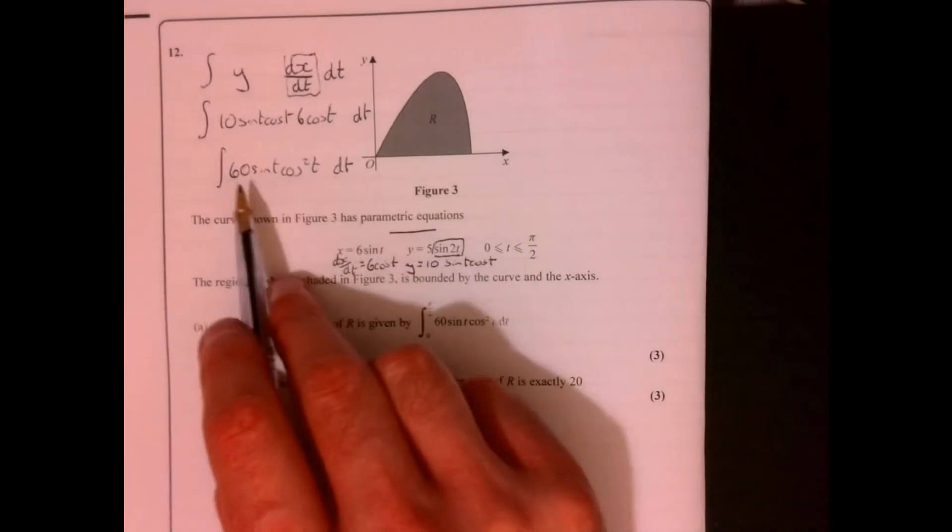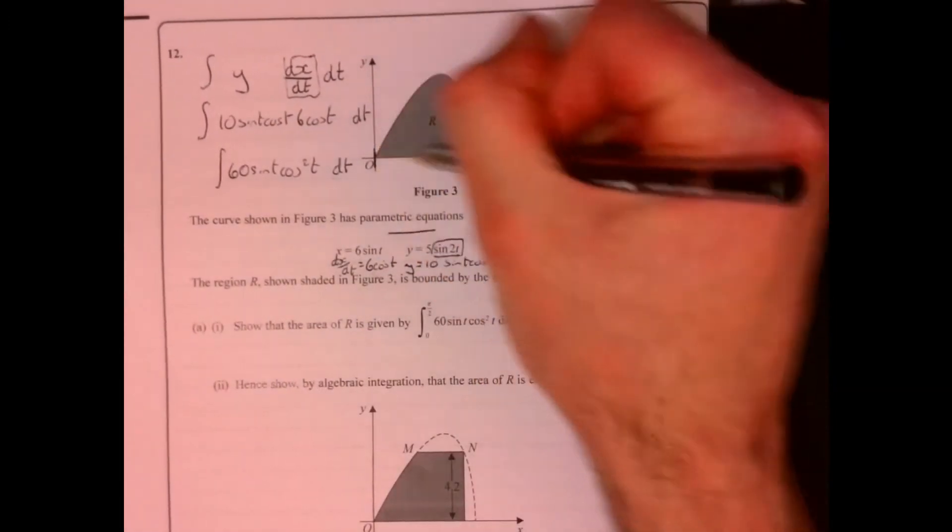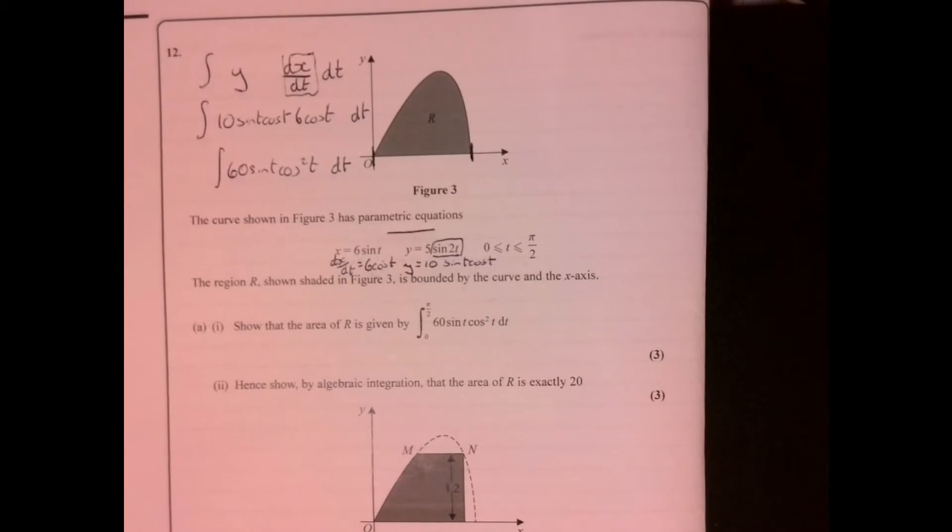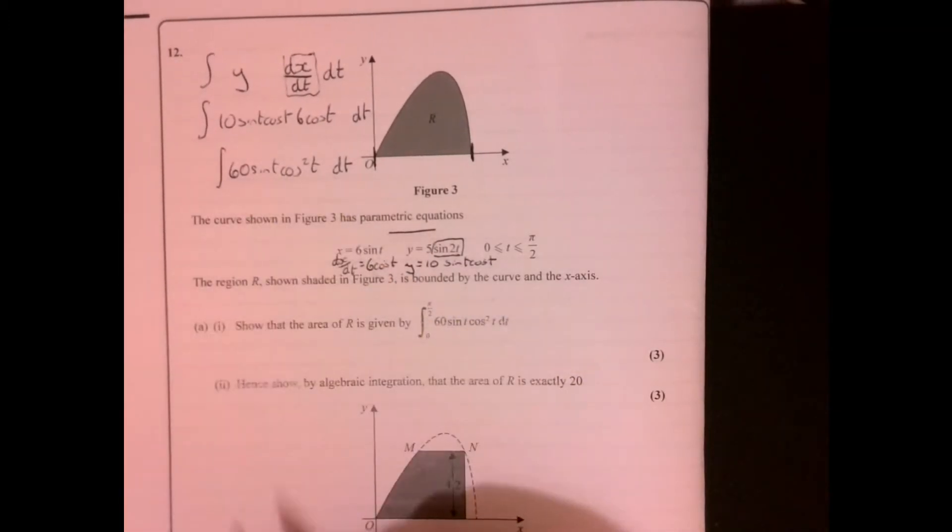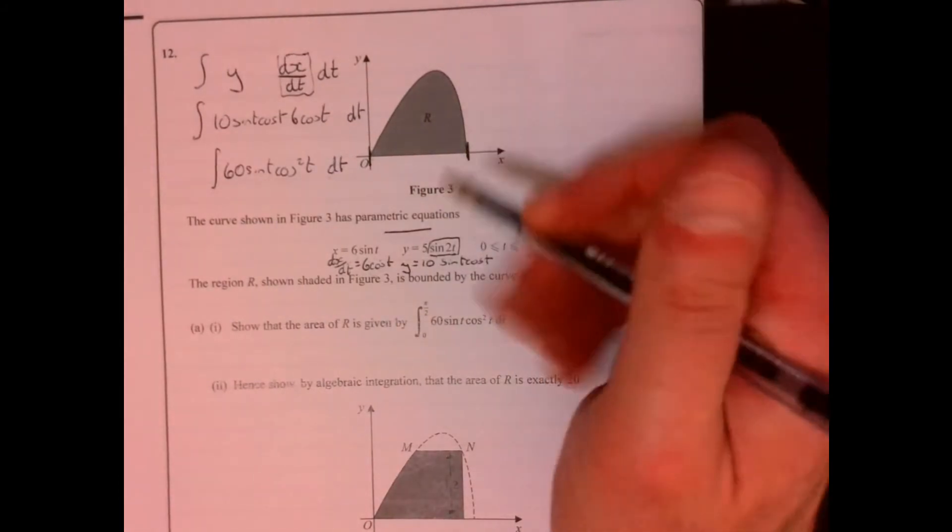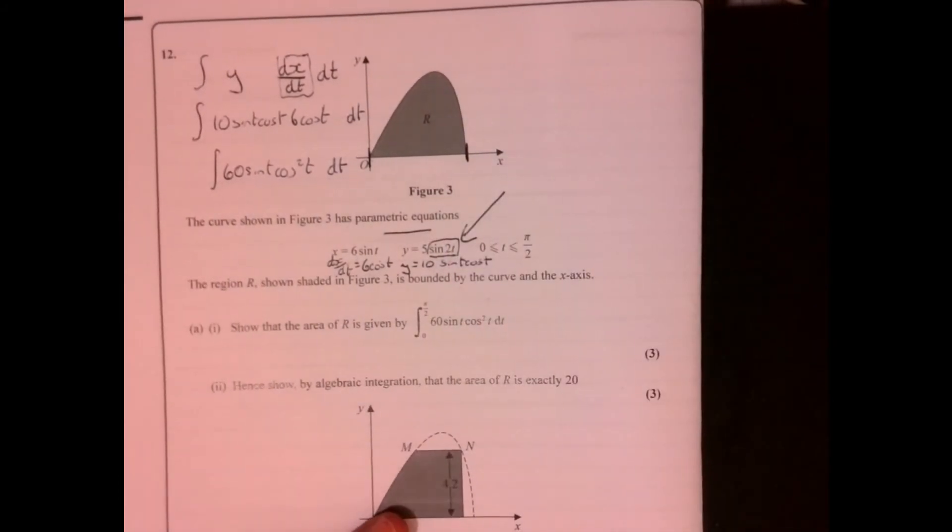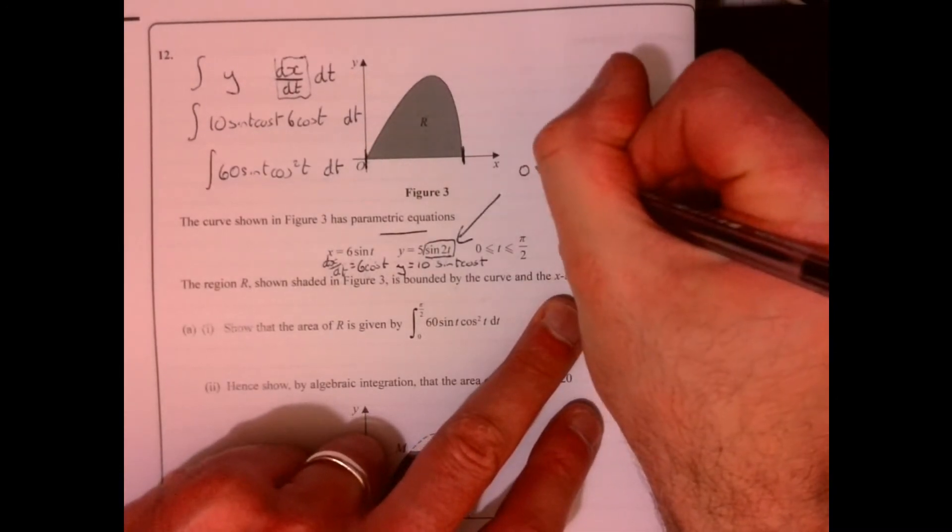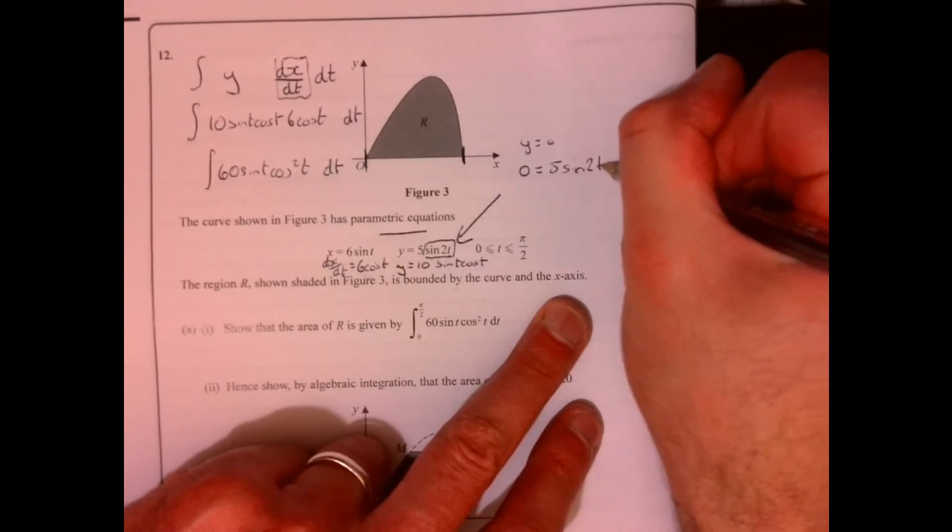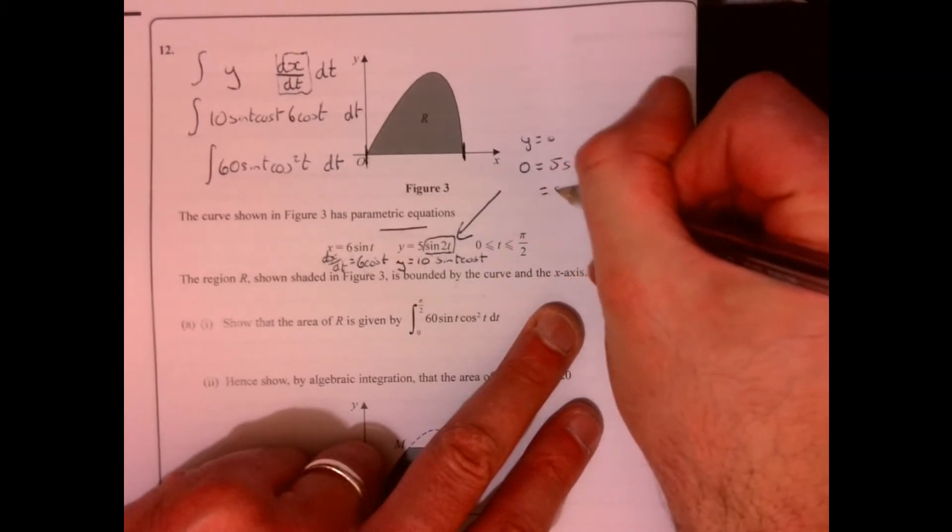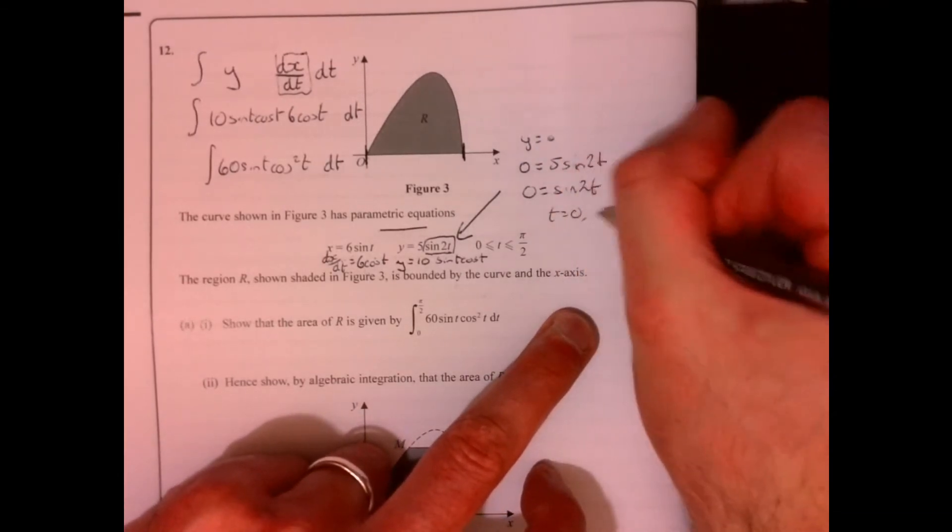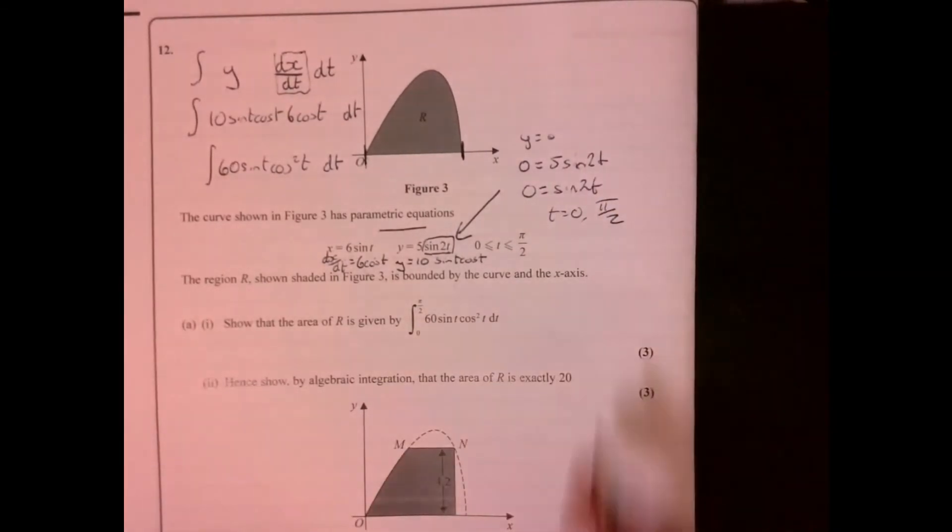Now the only other thing that we need to do is work out these limits. We need to think about those two points just there, effectively what we're trying to work out. We need them in terms of t and we need to think about which one of these guys to use. It's when y is equal to zero, so we're going to use this one just here. When y is equal to zero, sine 2t equals zero, divide through by the 5. That will give you values of t equal to zero and pi over two.